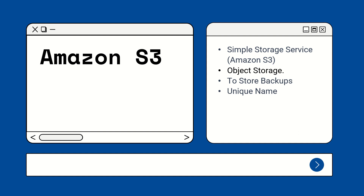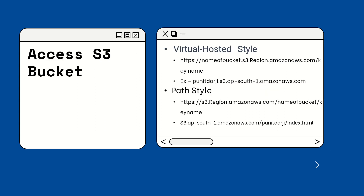Now, how can we access the S3 bucket? There are two ways to access buckets. One is the virtual-hosted style, where the URL would be: bucket-name.s3.region-name.amazonaws.com/filename. Here the example is: puneettdarji.s3.ap-south-1.amazonaws.com/index.html.